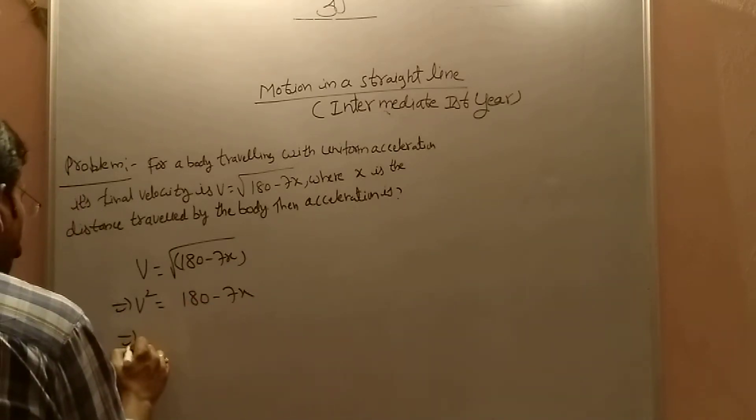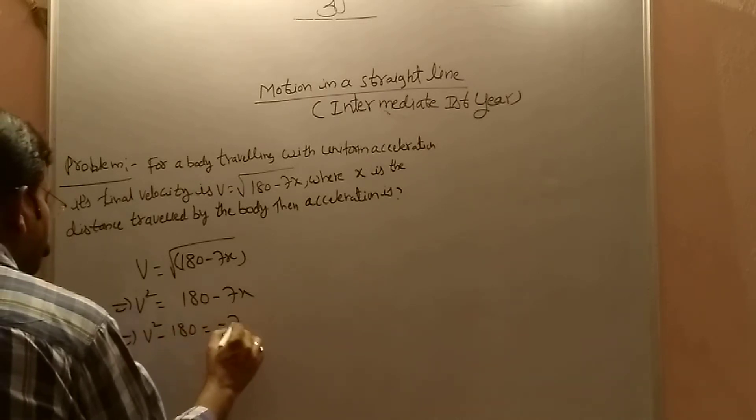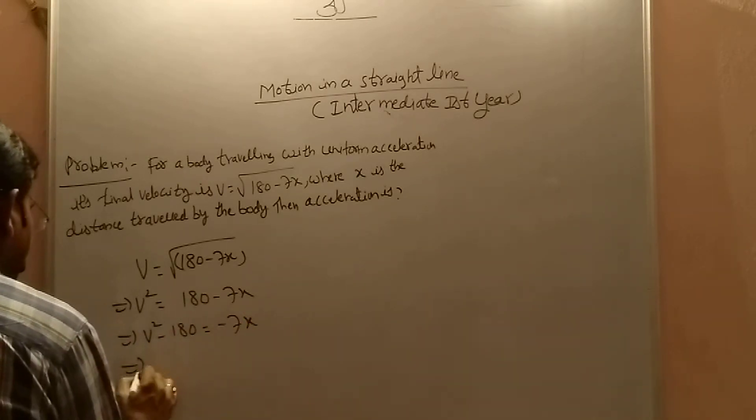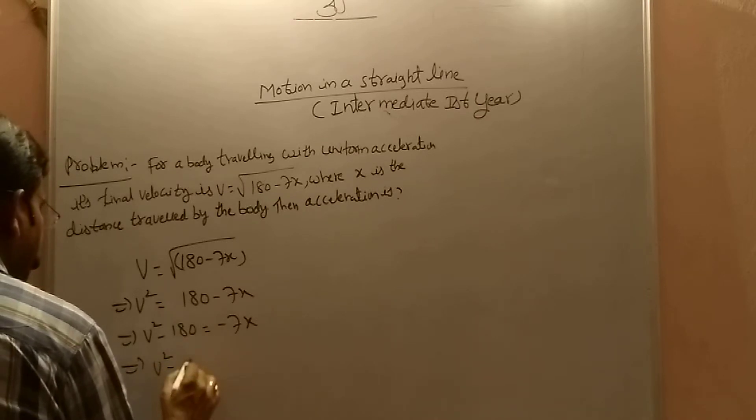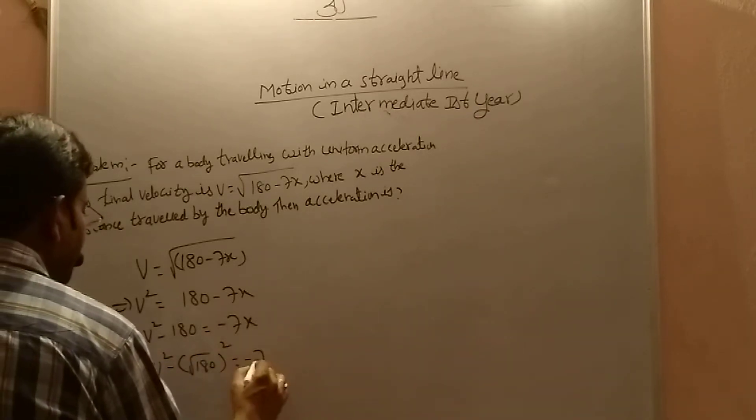Otherwise, you write this as v square minus 180 that equals to minus 7x. Again you write this as v square minus root 180 whole square that equals to minus 7x.